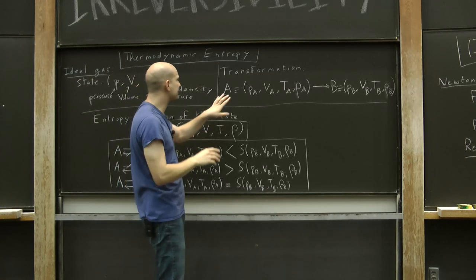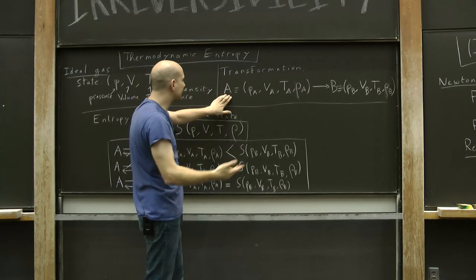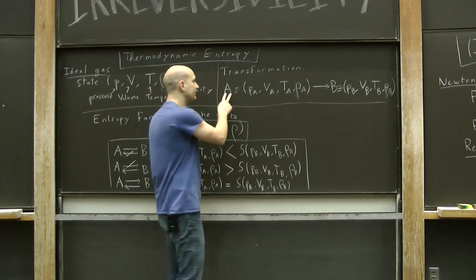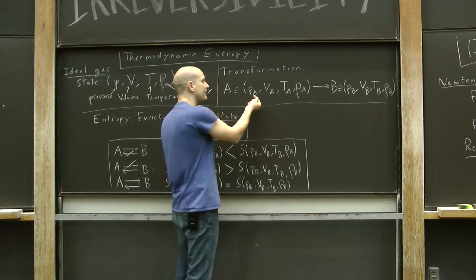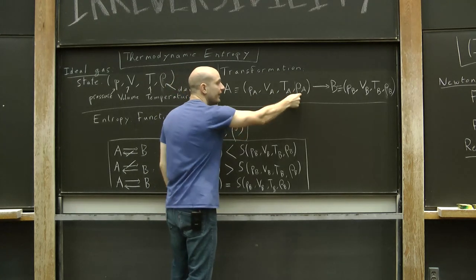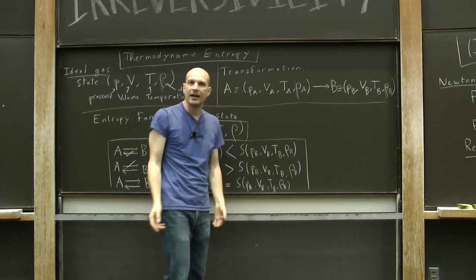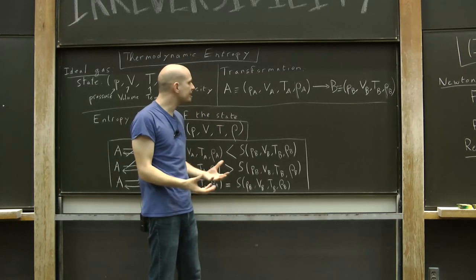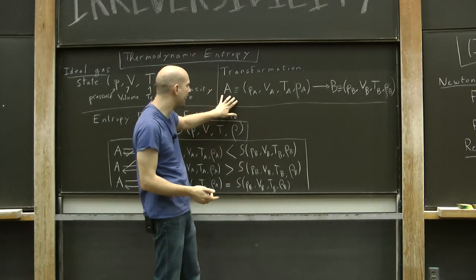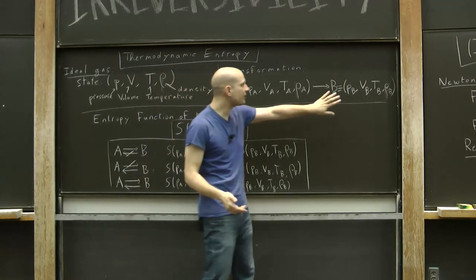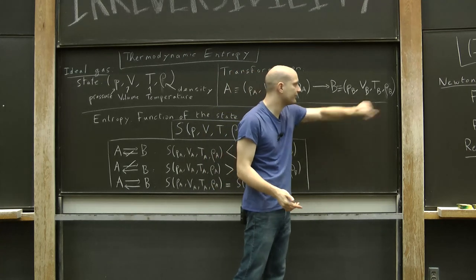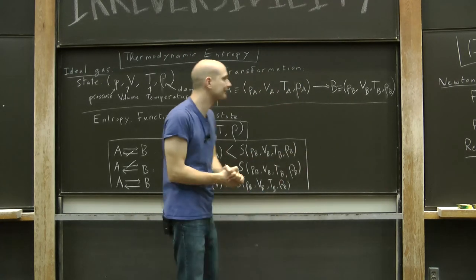And what we'll be interested in here are transformations between different states. Let's consider a state that I'll denote by A, meaning a certain pressure P, volume, temperature, and density. And I'm going to be considering some kind of a process that takes me from state A to another state B that has its own pressure, volume, temperature, and density.